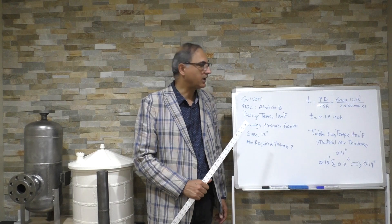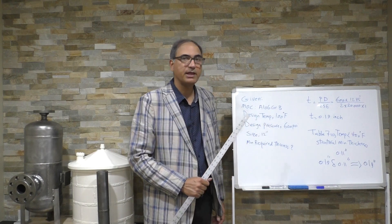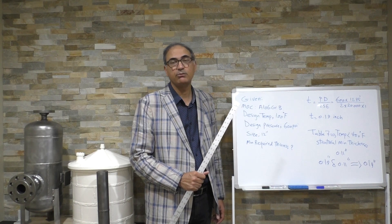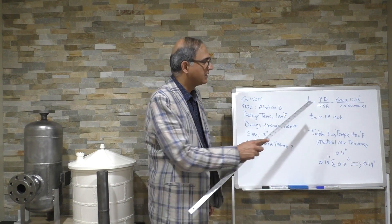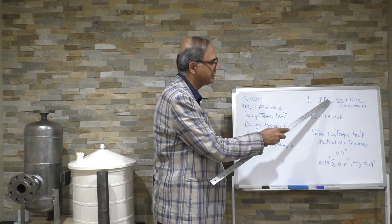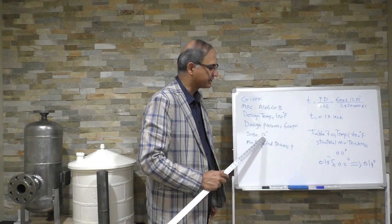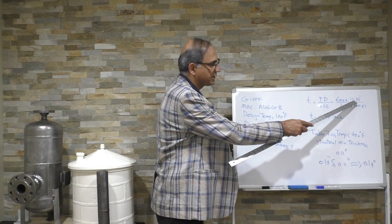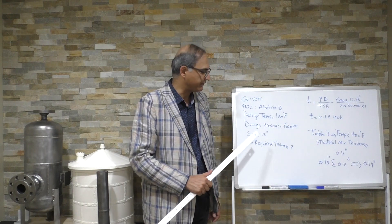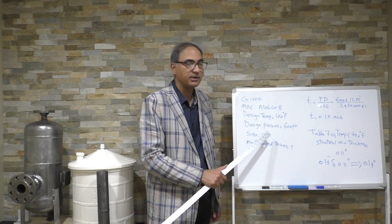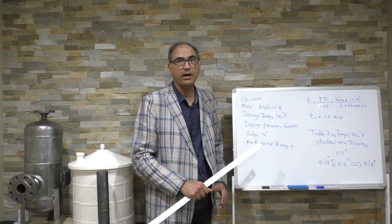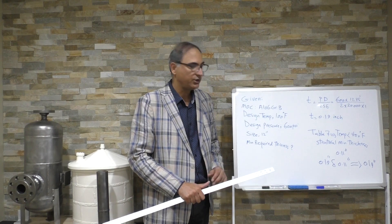First, we write down the equation from API RP 574 and calculate the minimum design thickness. For this formula, P is design pressure. We plug in the numbers, and D is the outside diameter. This is the nominal size versus the outside size. The outside diameter of the 12-inch pipe — there is a table in API RP 574 where you can look up outside diameters.